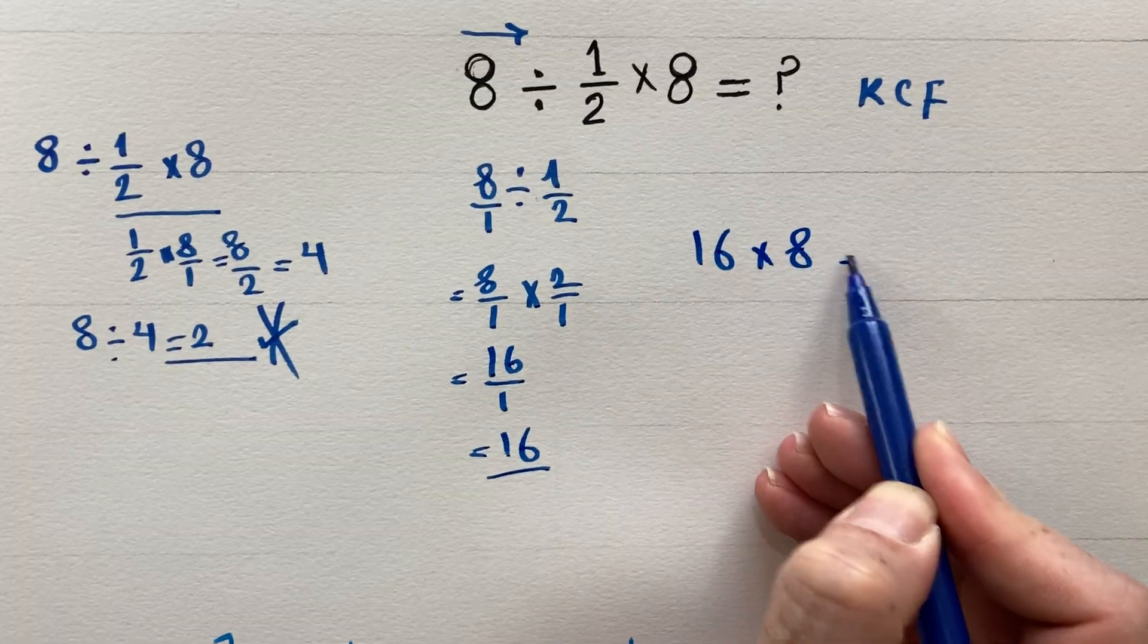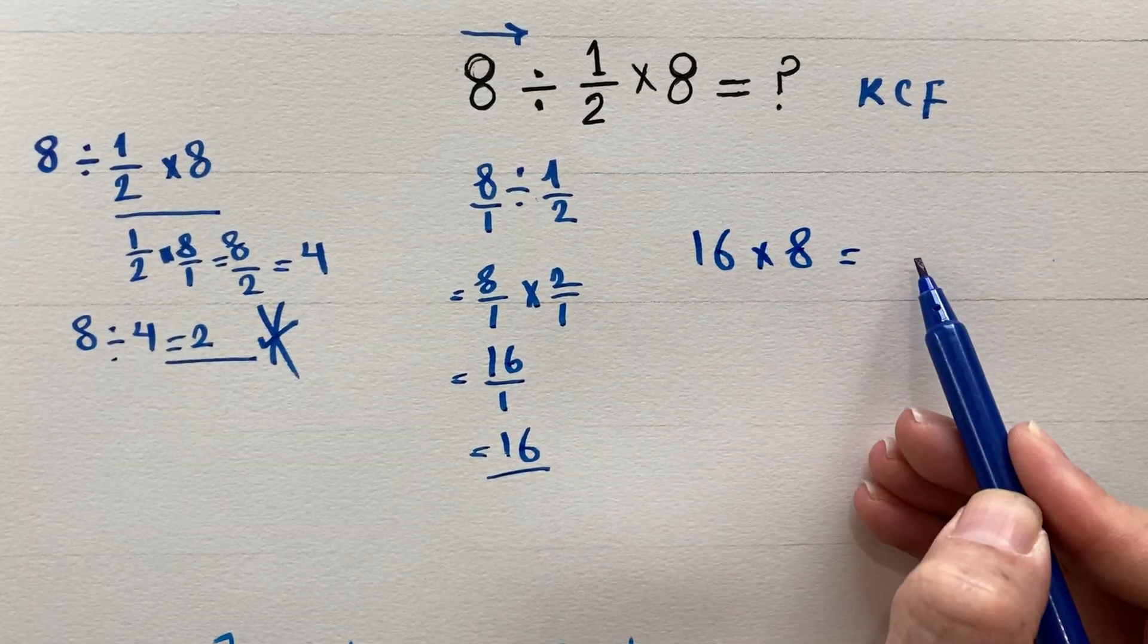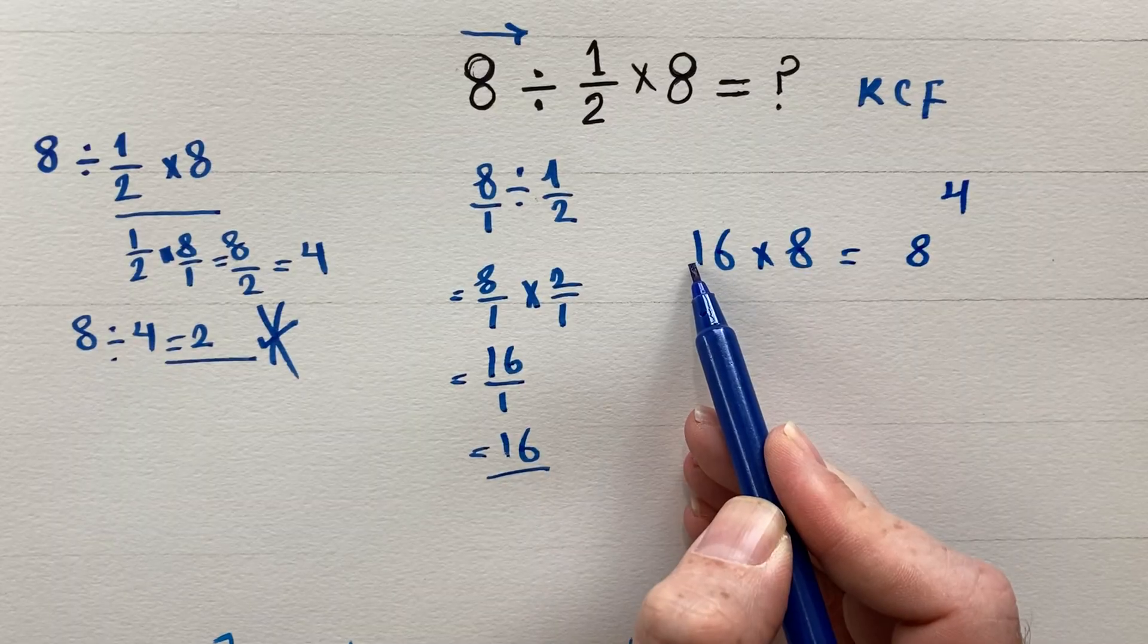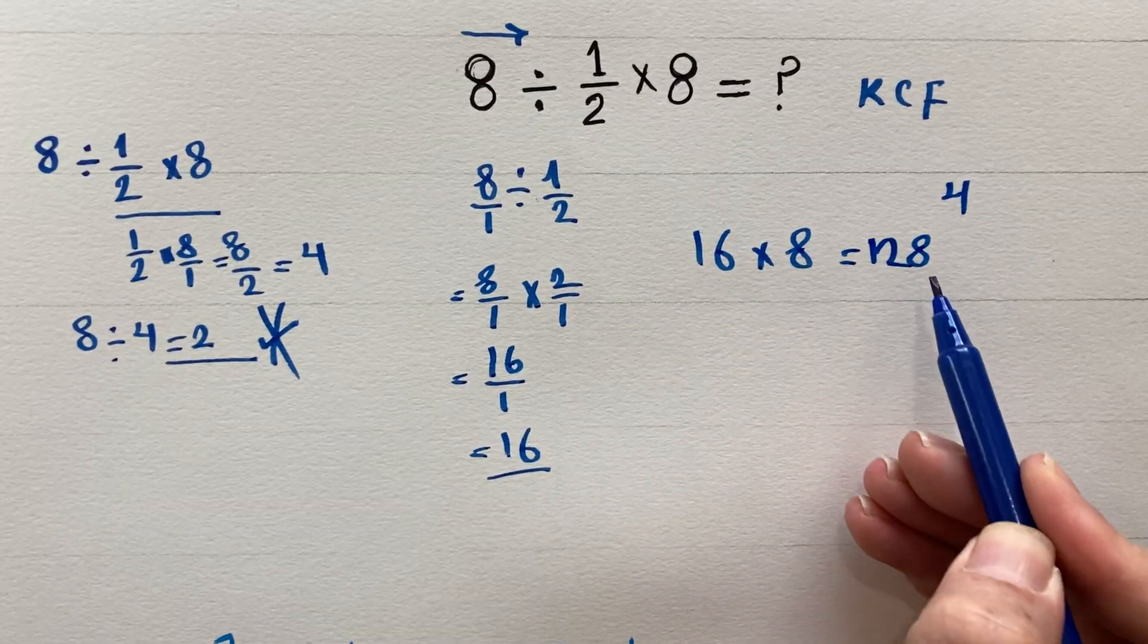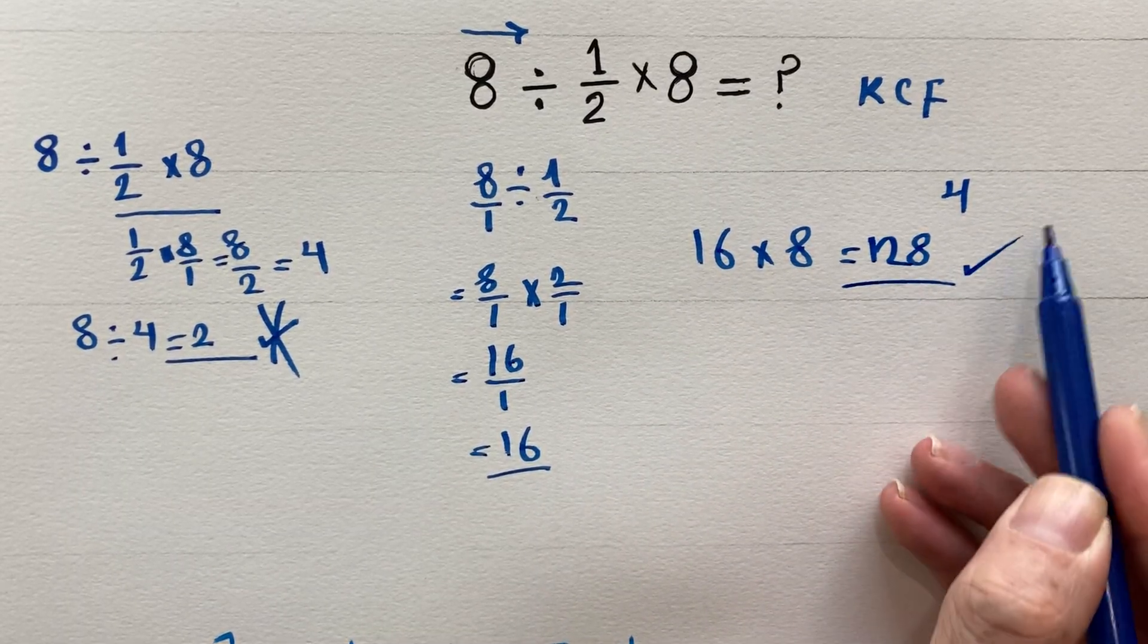times 8 is going to be 8 times 6 is 48, 8 times 1 is 8, plus 4 is 12, and 128 is your answer.